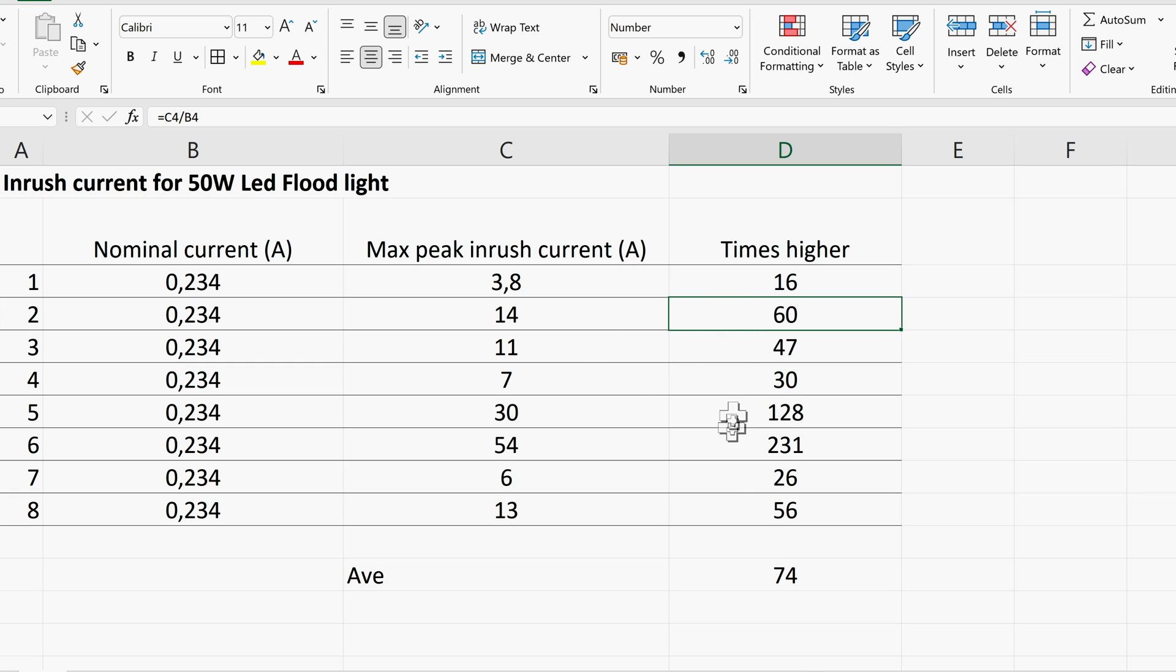And if you scroll down the list one can see that sometimes the inrush current is way above a hundred times higher than the nominal current. So I have seen reports on the internet saying that LED turn on current can be more than a hundred times higher. And I was a bit skeptical of that. But now having tested that myself I can see that even 200 times. And as I said, this really does depend on the LED driver circuit and at what phase the voltage was at the time of turn on.